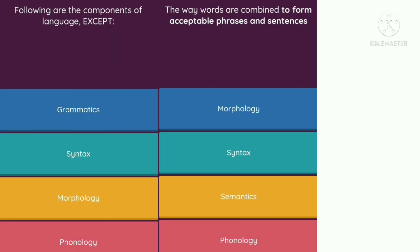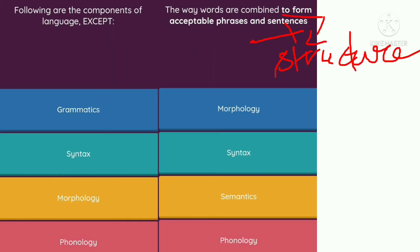Question 11: The way words are combined to form acceptable phrases and sentences — option A morphology, option B syntax, option C semantics, option D phonology. The question is talking about sentence structure, so the correct answer is option B, syntax.